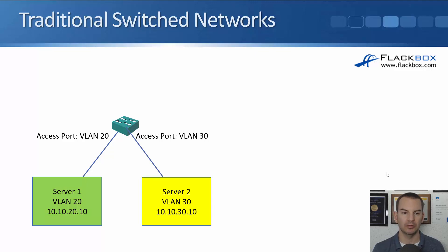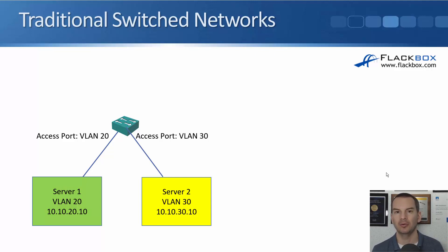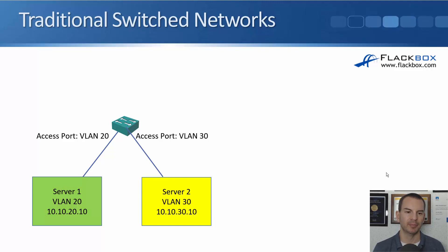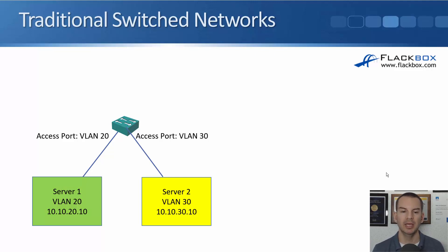In this example, we've got a switch with two servers plugged into it. These are bare metal servers — a bare metal server is one where the operating system runs directly on the hardware, not on a hypervisor. Server 1 is in VLAN 20 with IP address 10.10.20.10, and server 2 is in VLAN 30 with IP address 10.10.30.10.